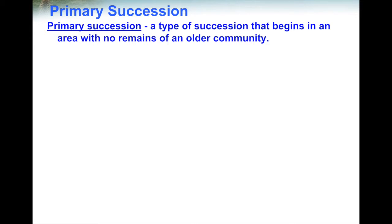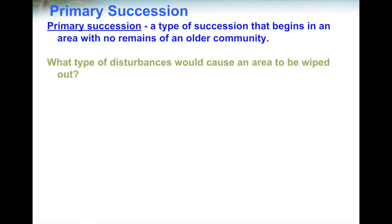In primary succession, it's a type of succession — a series of changes that occur in an area where nothing is left of the older community. There's no soil, there's no plants, there's no animals. Nothing is there. So what type of disturbances would cause an area to be completely wiped out?